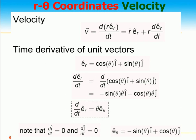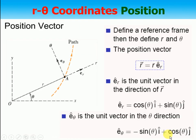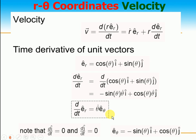Velocity is the rate of change of position. So velocity = d(r · er)/dt. Since both r and er are functions of time, by the product rule: v = ṙ · er + r · d(er)/dt. Taking the time derivative of er = cos θ · i + sin θ · j gives −sin θ · θ̇ · i + cos θ · θ̇ · j. Taking θ̇ common, this equals θ̇(−sin θ · i + cos θ · j) = θ̇ · eθ. So d(er)/dt = θ̇ · eθ, meaning the derivative of the radial unit vector with respect to time has a component in the theta direction.